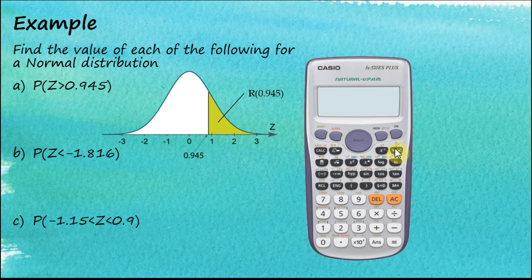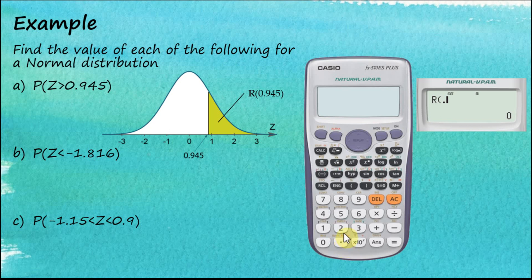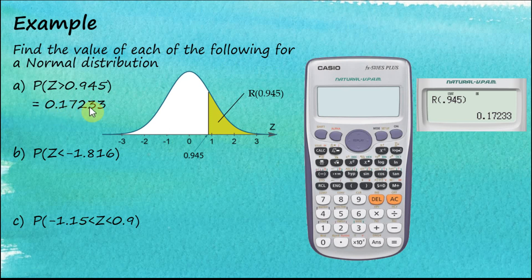In our calculator, we need to find R(0.945). We go to Shift, Statistics, choose 5 Distributions, and use R — number 3. We key in 0.945, close bracket, equal. The answer is 0.17233. So the area for Z greater than 0.945 is equal to 0.17233.